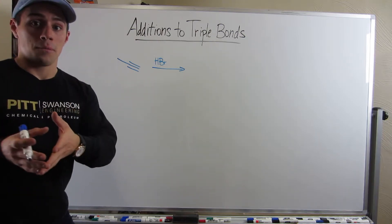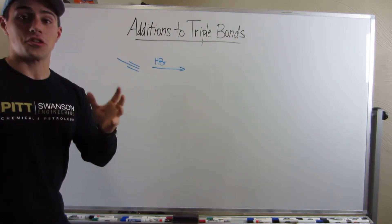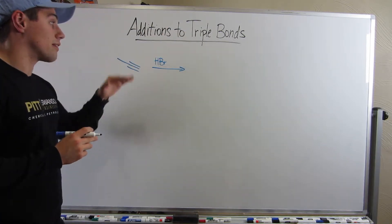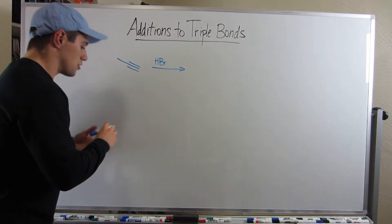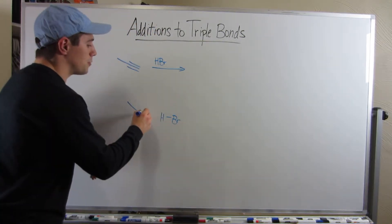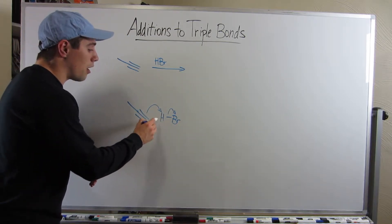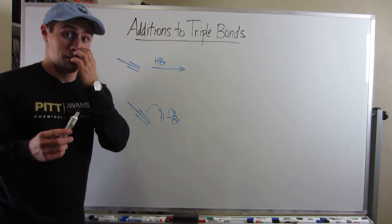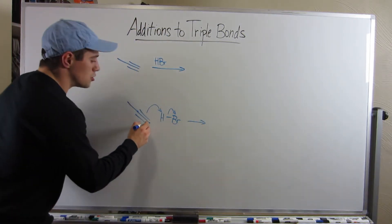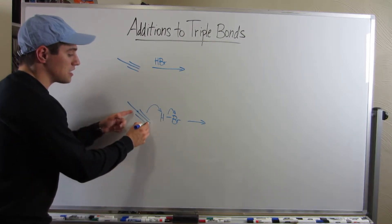Remember how mechanistically this would go. We know this triple bond has three times as much electron density as a single bond — it's very nucleophilic. It wants something positive, and in HBr that positive thing is going to be H+. So the triple bond is going to grab H+, and then we produce Br-. One of these carbons will bond to the hydrogen, the other one loses a bond. In Markovnikov addition, we always form the most stable carbocation, so we have to decide where the H goes. The H goes here, giving us a secondary carbocation.